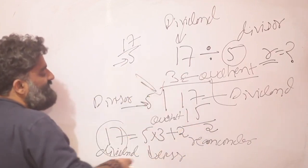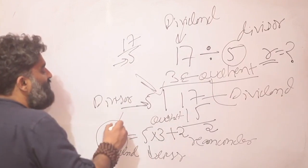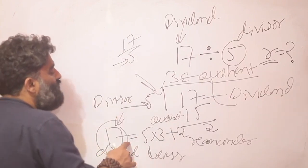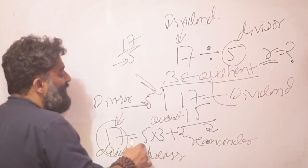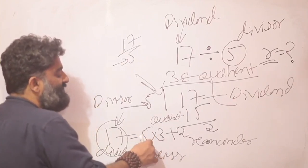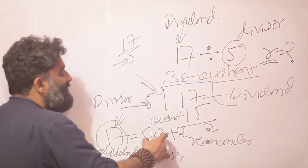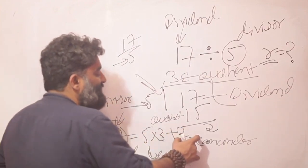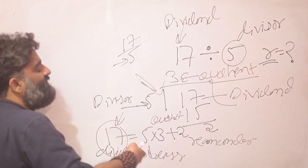When we are doing this division process, this is what we are trying to do. We are trying to take the dividend, look at it as a multiple of the divisor because 5 into 3, 15 is a multiple of 5, 5 is the divisor. Look at this as a multiple of 5 plus something.